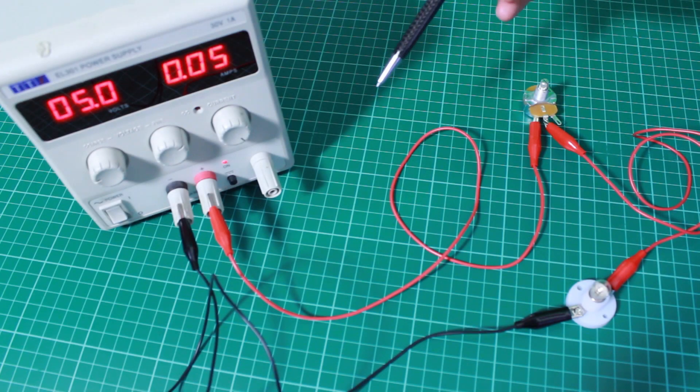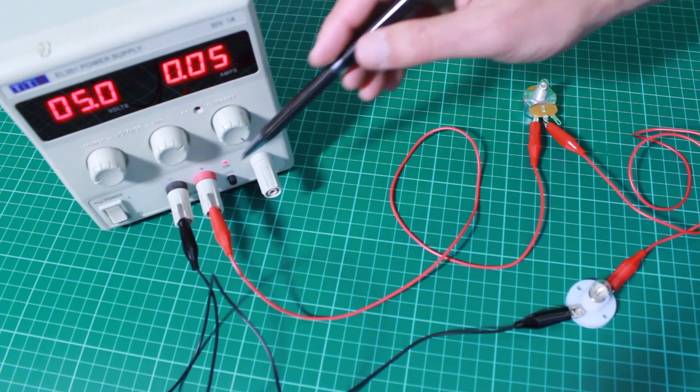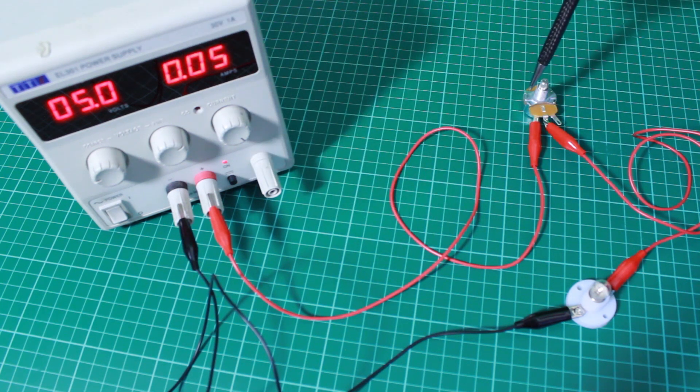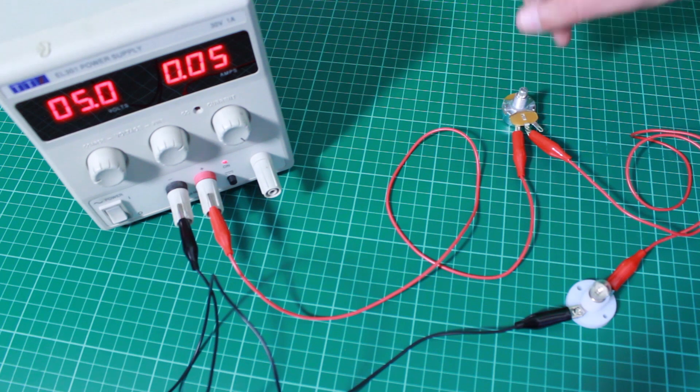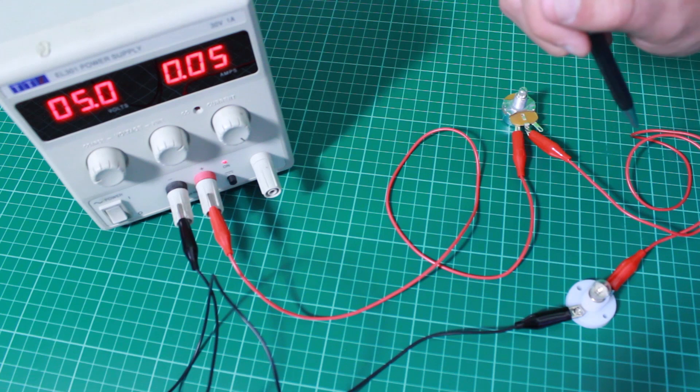So here we have a very simple circuit made up of a power supply set to 5 volts which we then connected to a variable resistor here and then connect that on to a little lamp and then back to the power supply.